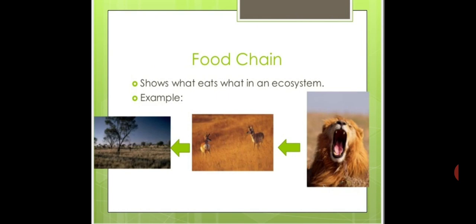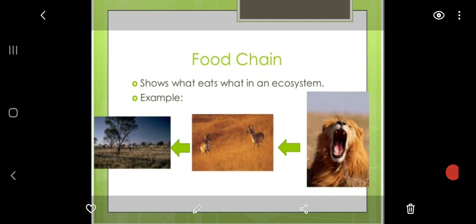Now there comes food chain. As the name of the chapter is Energy Flow in an Ecosystem, energy comes from the food we eat. Different organisms present in our ecosystem are linked together through a food chain. A food chain shows what eats what in an ecosystem — which organism eats what and how it contributes to the flow of energy. For example, a lion eats a deer, and the arrows show the direction of the food chain.